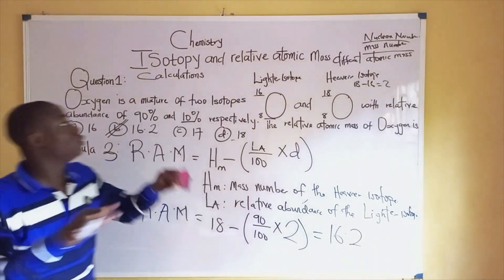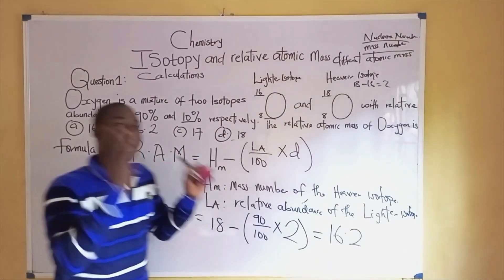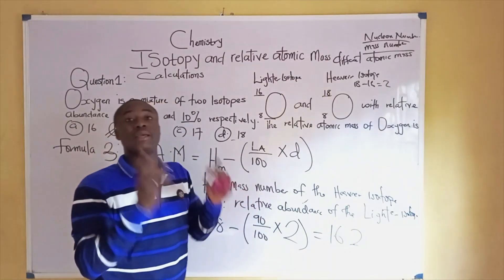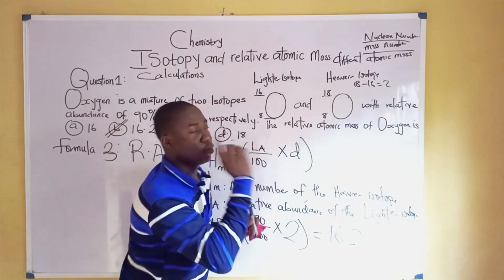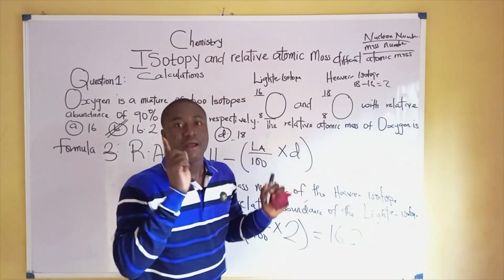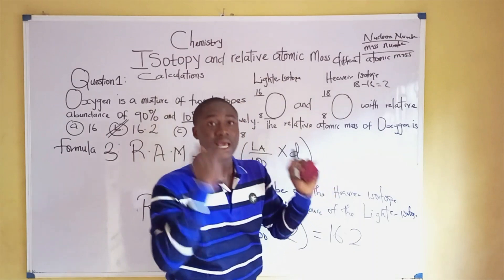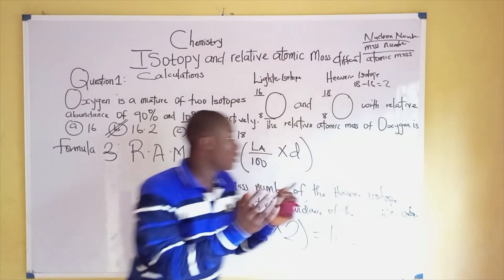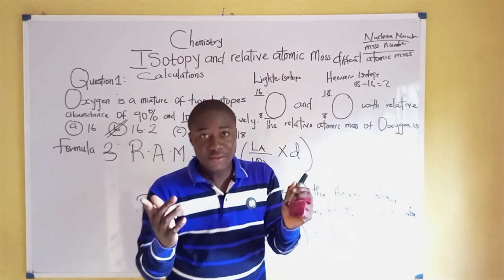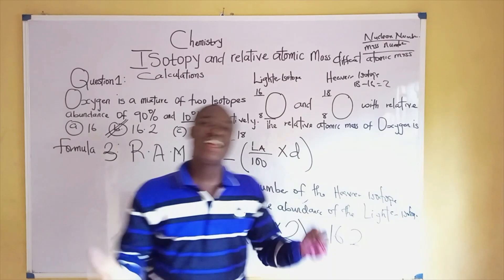You can see that to solve problems on relative atomic mass, we can use three formulas. Remember, isotopy is the phenomenon whereby atoms of the same elements have the same atomic number but different mass number. The first hypothesis on isotopes was discovered by Frederick Soddy in 1912 and later rediscovered by Francis Armstrong in 1915. I believe we now understand the concepts about isotopy and relative atomic mass calculations. Thanks for watching.